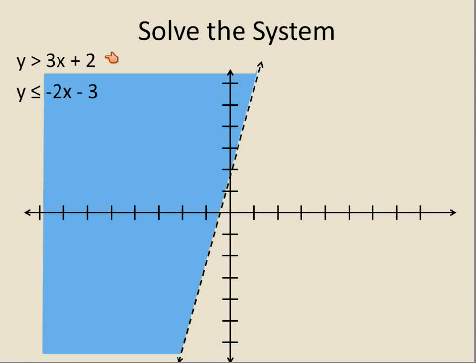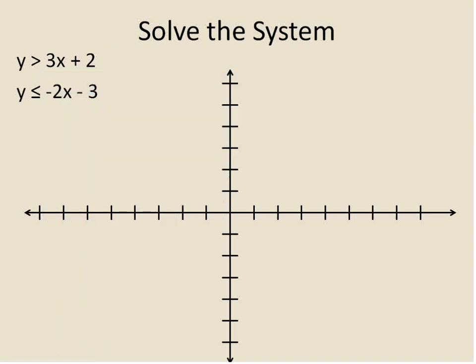Now we're going to clear the graph, graph the second one. y is less than or equal to negative 2x minus 3. We know that our y-intercept is negative 3. That's where it crosses the y-axis. And our slope is negative 2.